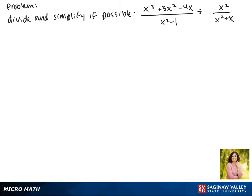Today we'll be dividing and simplifying if possible the expression x cubed plus 3x squared minus 4x over x squared minus 1 divided by x squared over x squared plus x.